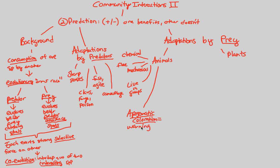Aposematic coloration simply means warning coloration. This is something that prey has evolved over many millions of years — the idea that these organisms actually don't hide. They don't flee away from predators, which seems counterintuitive. They actually have such bright colors and such obvious patterns that these colors are advertising to the predators. This seems like it should not work in nature, but it does.